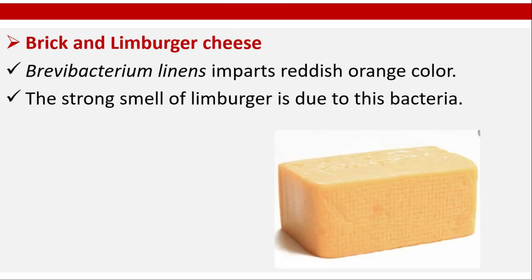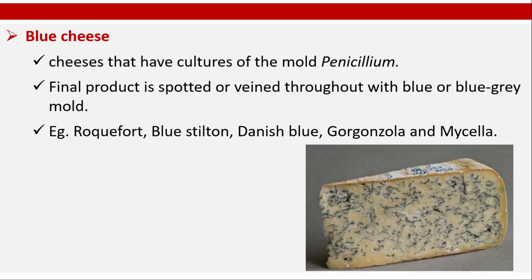Brick and Limburger cheese: Brevibacterium linens imparts reddish-orange color. The strong smell of Limburger is also due to this bacteria. Blue cheese: cheeses that have cultures of the mold Penicillium. The final product is spotted or veined throughout with blue or blue-gray mold. Examples: Roquefort, Blue Stilton, Danish Blue, Gorgonzola, and Micella cheese.